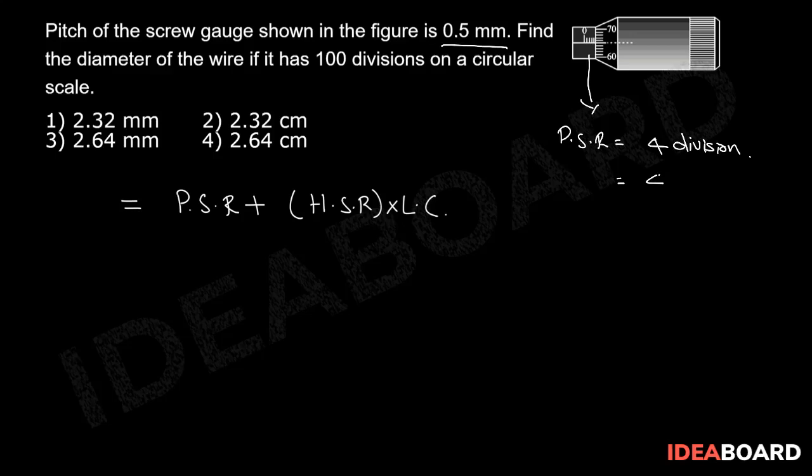So, pitch scale reading will be 4 times 0.5 equal to 2 mm. Now, head scale reading is given as 64 divisions.